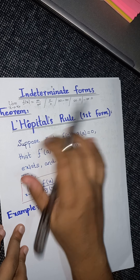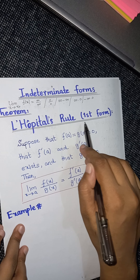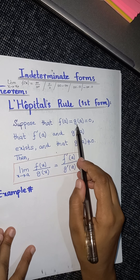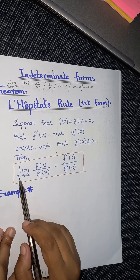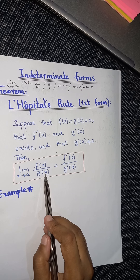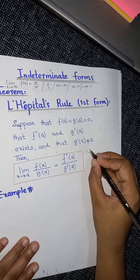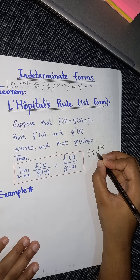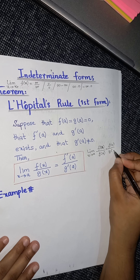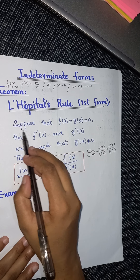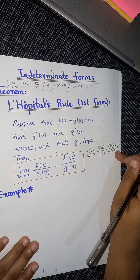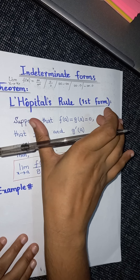If it happens that when we apply the limit on some function we get one of these forms, then we will use L'Hôpital's Rule. The theorem states — this is L'Hôpital's Rule first form, and it is very easy to apply. Suppose that f(a) and g(a) are both equal to zero. We are taking the limit as x approaches a of f(x) divided by g(x), and when we put the limit in we get f(a) divided by g(a). If both are zero, we get the zero over zero form, which is known as an indeterminate form. This is the condition we first have to check.